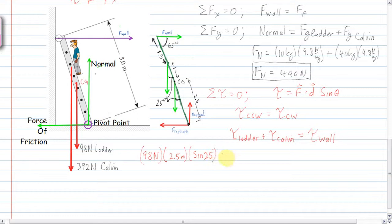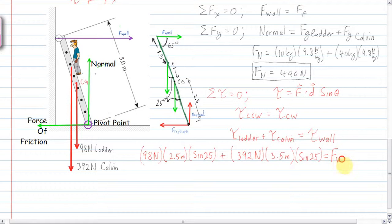The torque caused by Calvin: he weighs 392 Newtons (40 times 9.8). His distance from the pivot point is two and a half plus one, so 3.5 meters, times sine 25 degrees. That has to equal the torque of the wall: the wall force times 5 meters times sine 65 degrees. One equation, one unknown.